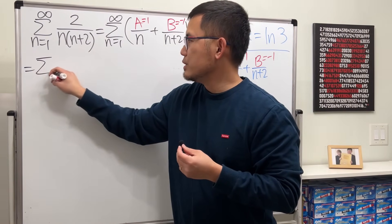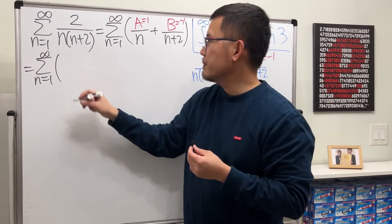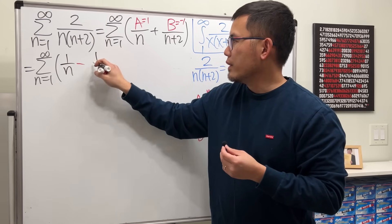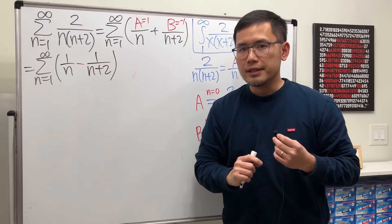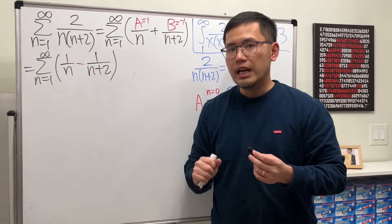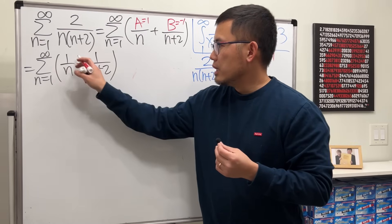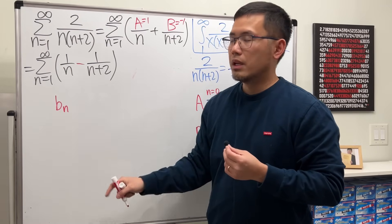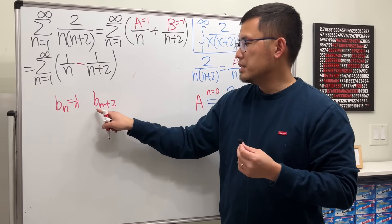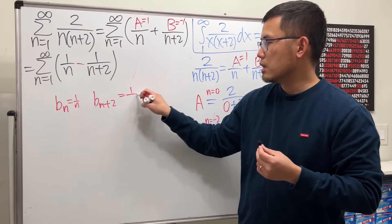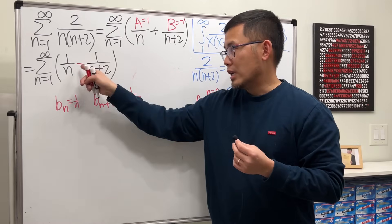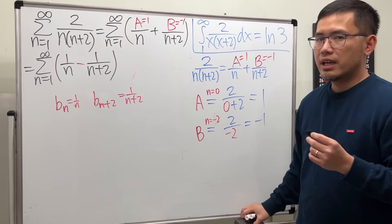Now we come back. A equals 1, B equals negative 1. So the series as n goes from 1 to infinity becomes 1 over n minus 1 over n plus 2. Notice we have a subtraction, and the first term and the second term are off by 2 — if you think of b_n = 1/n, then the second term is b_{n+2}. Because we have a subtraction with terms off by 2, this will give us a telescoping series.